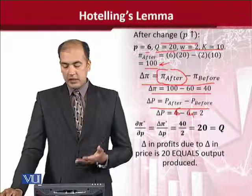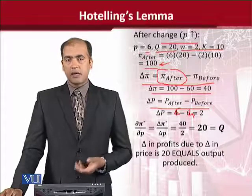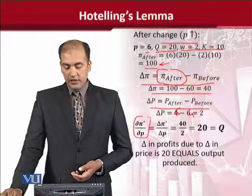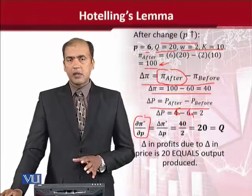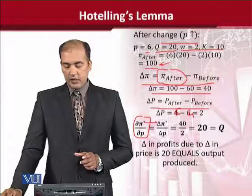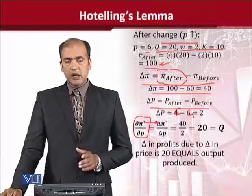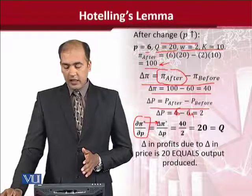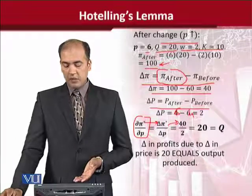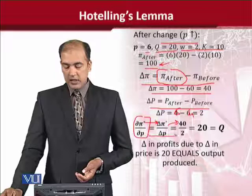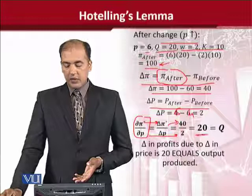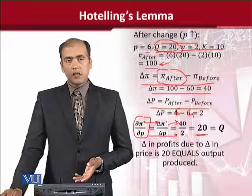The change in price is definitely 2; we had increased the price by 2. Now, if you focus on the Hotelling's Lemma equation and use it in this discrete case — where we use delta in the discrete sense — and plug in the values: delta pi is 40 (change in profit was 40) and change in price was 2. So when we divide, we get 20. And if you focus on the supply, it was 20 in both cases. So it is also equal to Q.